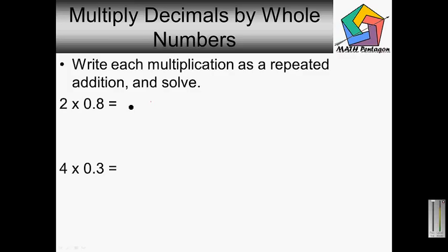So 0.8 times 2. That's like saying 0.8 plus 0.8. Let's add them up. 8 plus 8 is 16. Carry the 1. 1 plus 0 is 1. So our answer here would be 1.6.